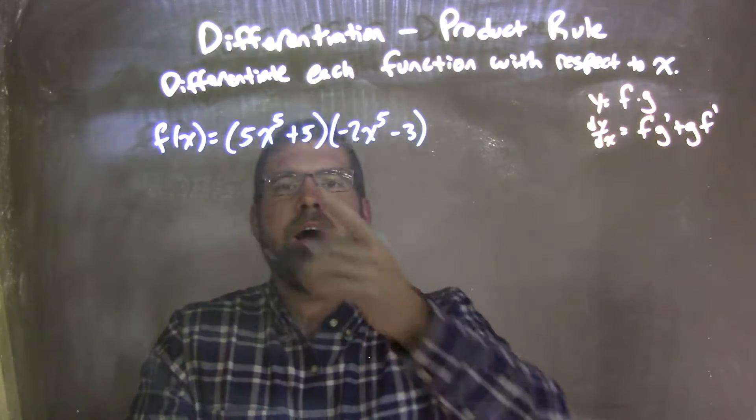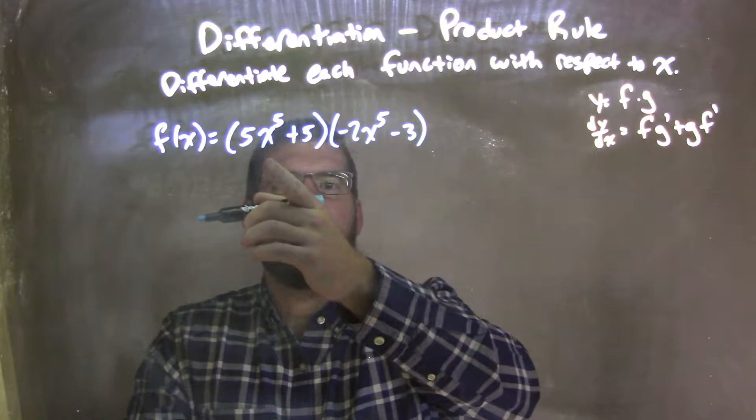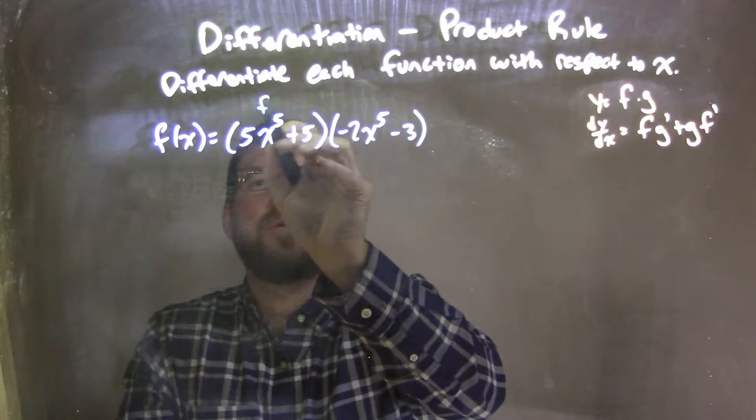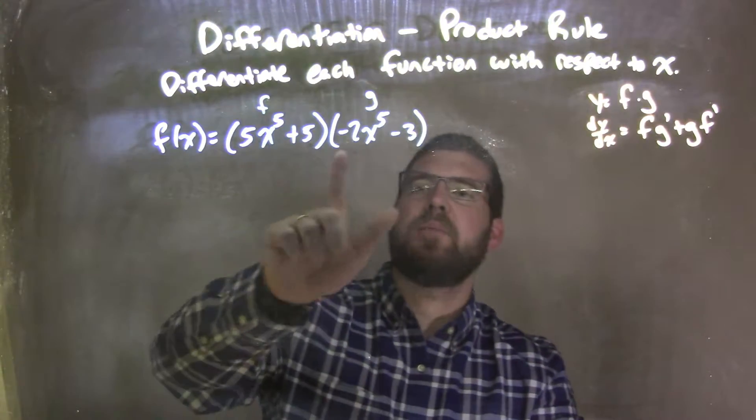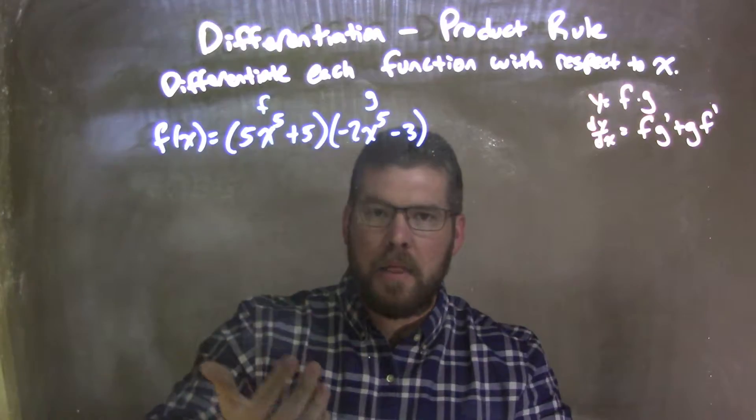What I want to do now is identify my two functions. I'm going to label the first one f and the second one g. So I have two functions that are being multiplied, and now I can apply the product rule.